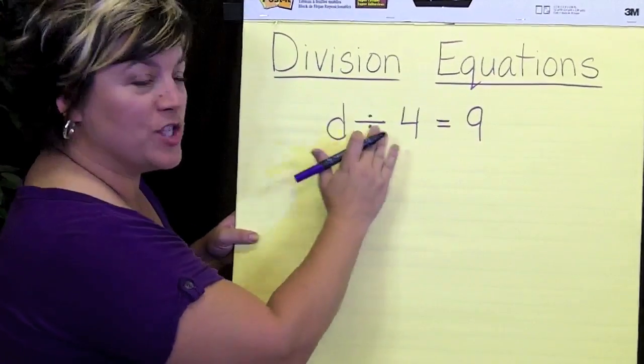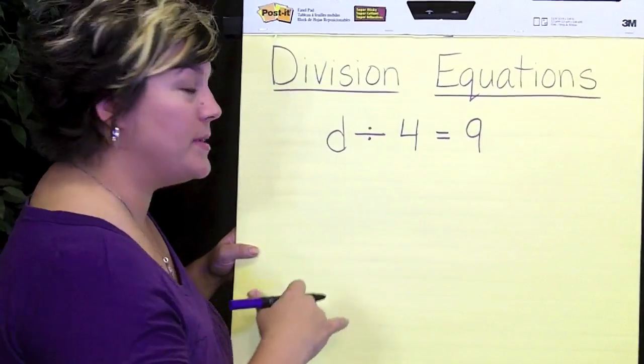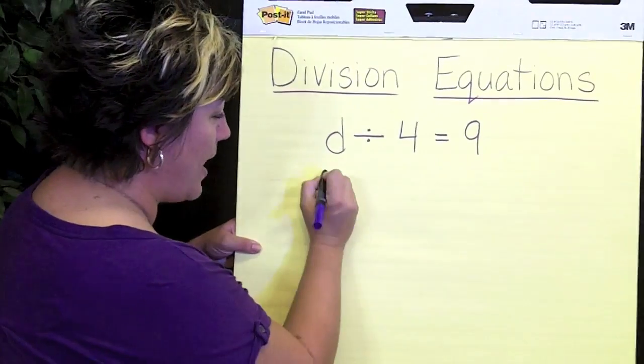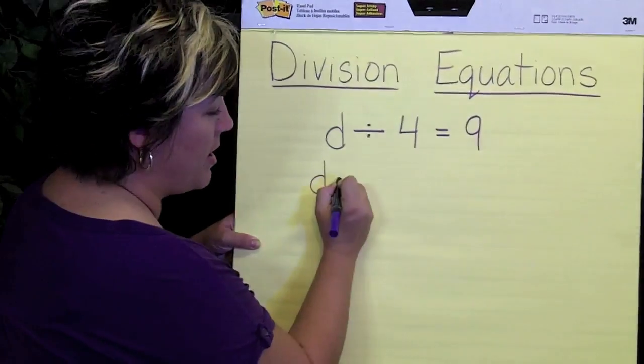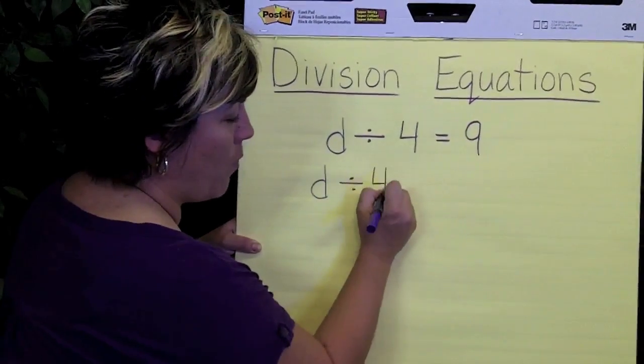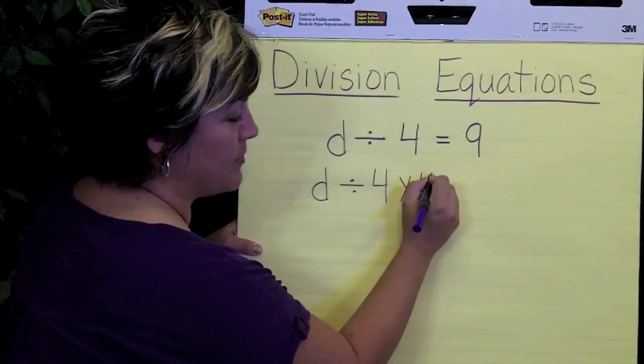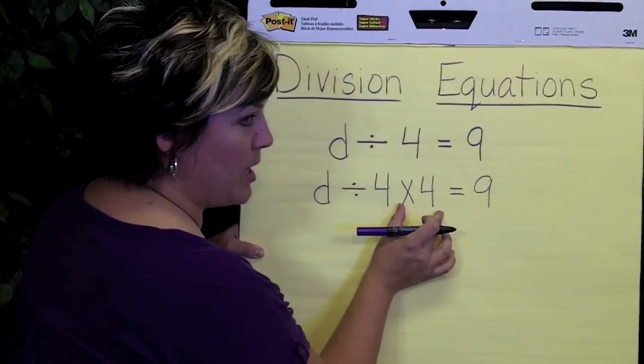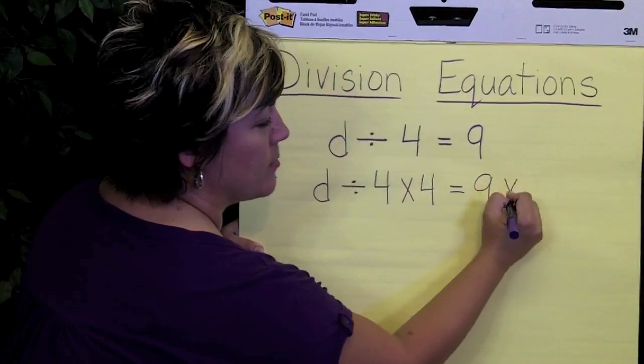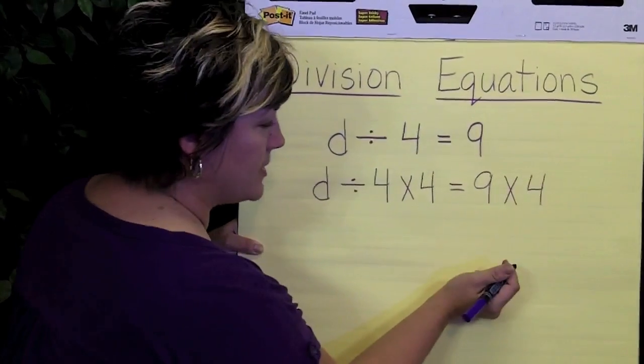Since it's a division equation, we're going to use the inverse, which is multiplication, to help us solve it. So we're going to go ahead and say d divided by 4 multiplied times 4 equals 9. And since we multiplied by 4 on this side, we want to multiply by 4 on the other side.